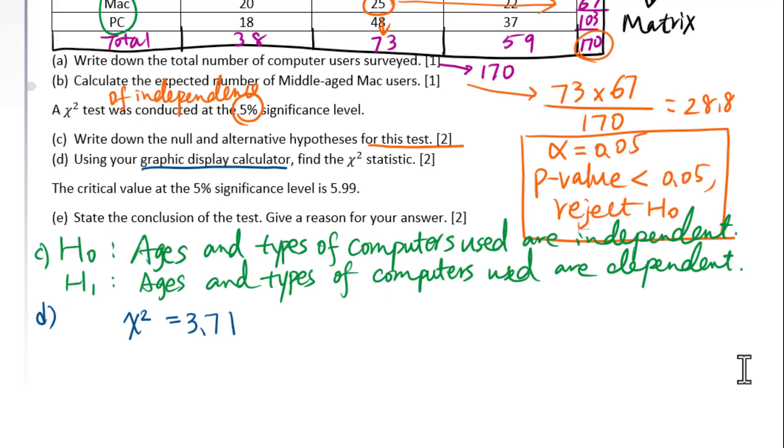The critical value at the 5% significance level is 5.99. State the conclusion of the test. Give a reason for your answer. You just need to remember the rule of critical value is opposite to the significance level.